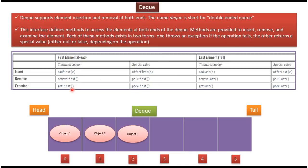To examine whether an element is present at the head side, we have two methods: GetFirst and PeekFirst. If the operation fails, the GetFirst method will throw an exception. If the operation fails, PeekFirst will return NULL.